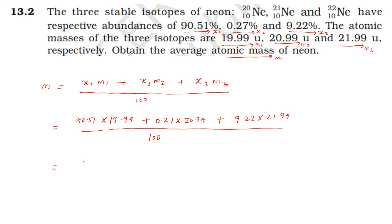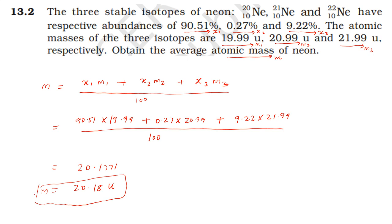The answer comes out to approximately 20.1771, which rounds to 20.18 atomic mass units. So the average atomic mass of neon is 20.18 u.